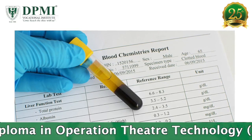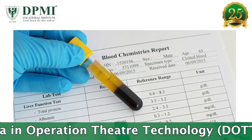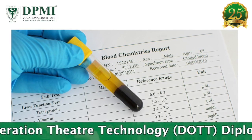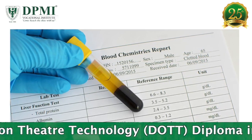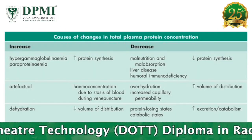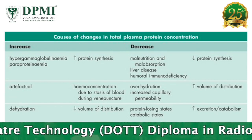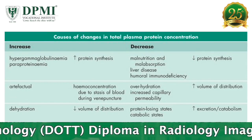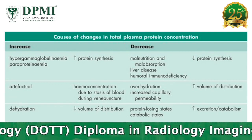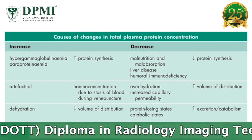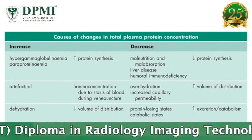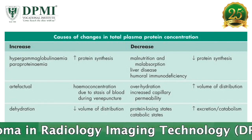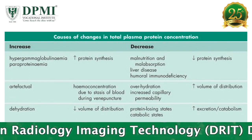Normal range: The serum level of total protein is 6 to 8 grams per dL. Clinical significance: An increase in total protein may occur in dehydration, where both albumin and globulin are increased due to hemoconcentration.